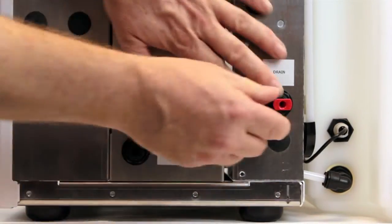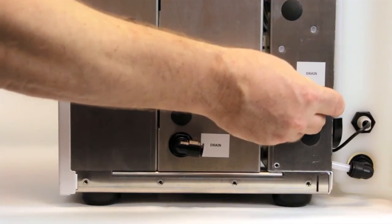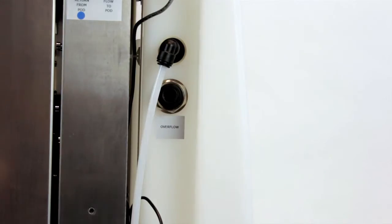First, remove all of the red transit plugs by simply depressing the locking ring and pulling them out. Next, fit the stem elbows into the water inlet and drain connection.